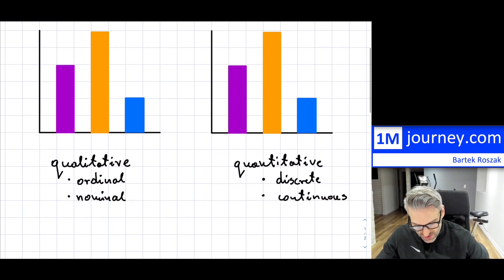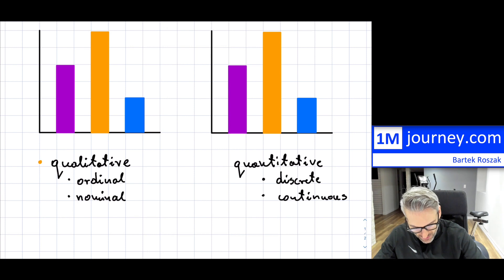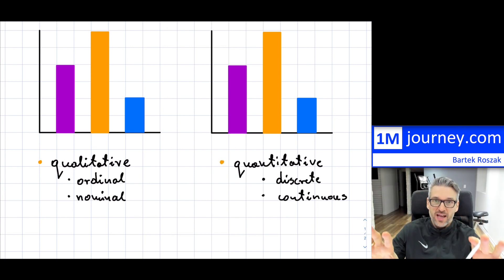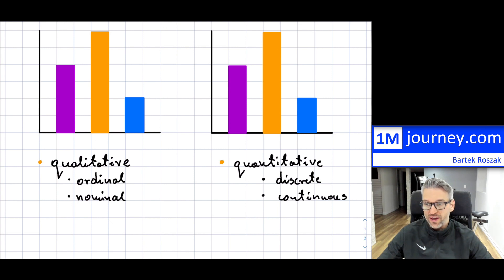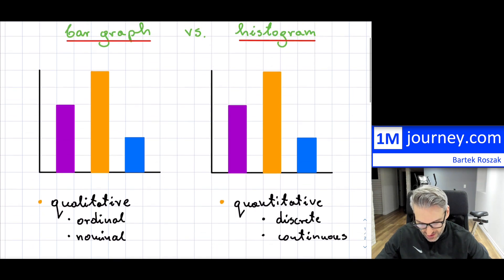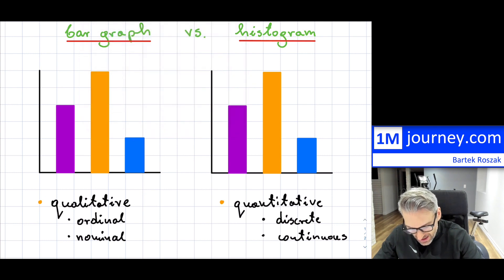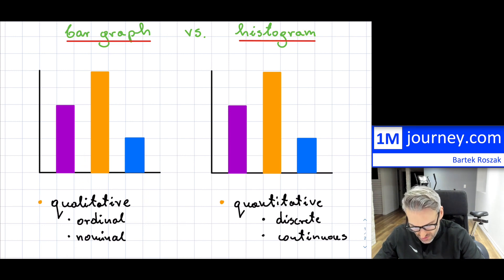Now, this is one key thing in terms of the bars themselves — you will probably notice that the bars in a bar graph, because you're talking about a qualitative variable, the categories within them are separated. You need to see that the bars are directly separated from each other, and that's a key feature of a bar graph.